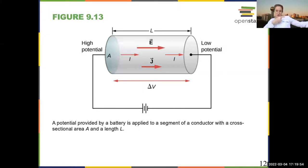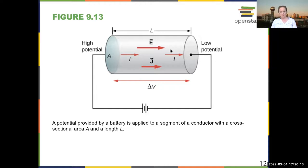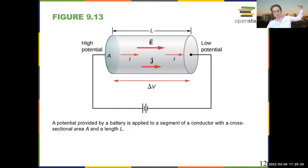Of course, the charges that actually move are the electrons, so everything's going in the opposite direction. But it's useful to keep positive charges in mind. As you go from high potential to low potential, the electric field — which points in the direction that positive charges want to move — points from high to low. The current is analogous to water flowing down a hill; it points in the direction the positive charge wants to go, and current density is just current divided by the area.